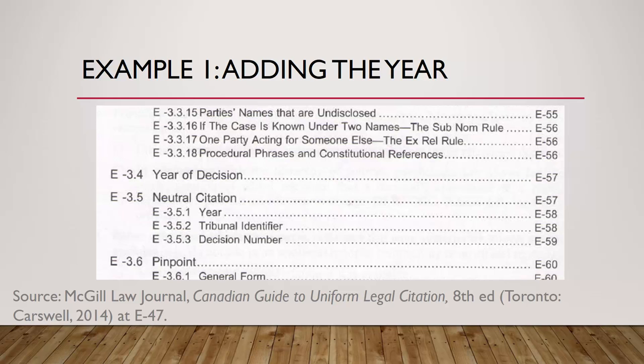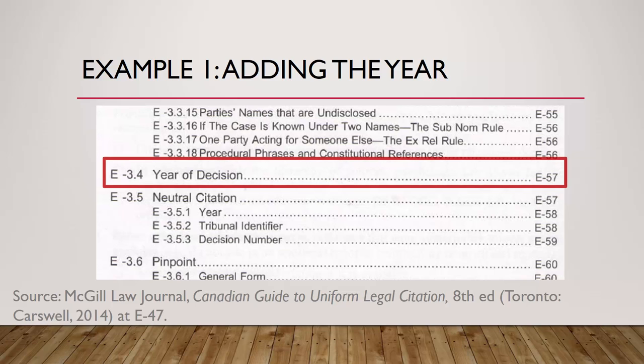Now we need to determine if we are adding the year of the decision. Looking at the table of contents under the jurisprudence tab, we see that there is a section on the year of the decision. According to this section, the year should be added if there is no annual reporter, or if the annual reporter is a different year than when the decision was issued. Essentially, if the year of the decision is not evident from your citation information, it should be added.